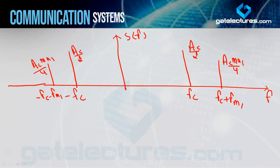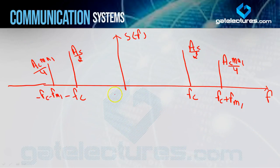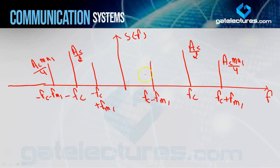आपको याद होगा जब हम single-tone modulation पढ़ रहे थे, तब भी बताया था कि Ac/2 वाला amplitude Ac·Ma/4 वाले amplitude से always greater होगा, क्योंकि Ma की value ideally less than 1 होती है। अगला term fc−fm1 है — यहाँ पर fc−fm1 और −fc+fm1 पर impulses होंगे, amplitude Ac·Ma1/4 same रहेगा।